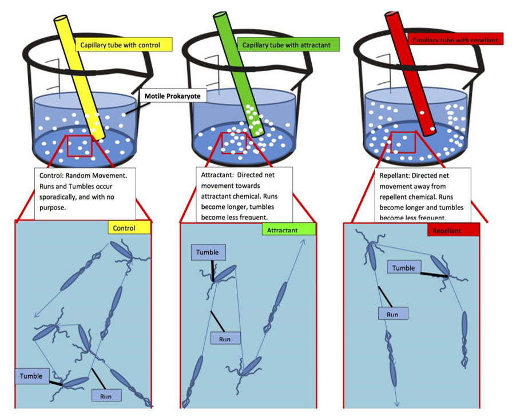The overall movement of a bacterium is the result of alternating tumble and swim phases. If one watches a bacterium swimming in a uniform environment, its movement will look like a random walk with relatively straight swims interrupted by random tumbles that reorient the bacterium. Bacteria such as E. coli are unable to choose the direction in which they swim, and are unable to swim in a straight line for more than a few seconds due to rotational diffusion. In other words, bacteria forget the direction in which they are going. By repeatedly evaluating their course, and adjusting if they are moving in the wrong direction,